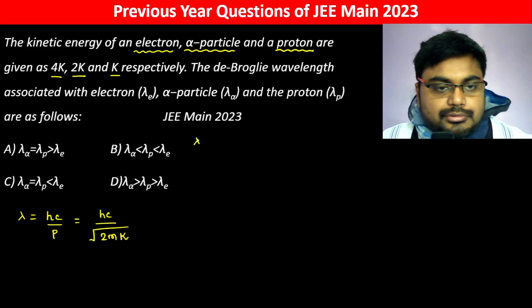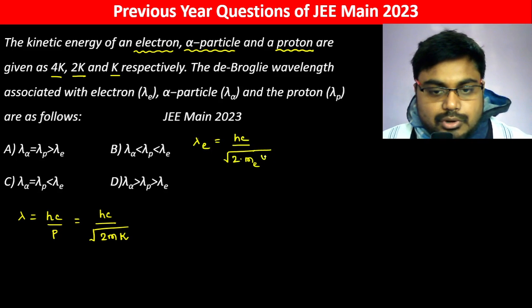Lambda of electron ho jayega hc divided by root of 2 into mass of electron into k, which is 4k.